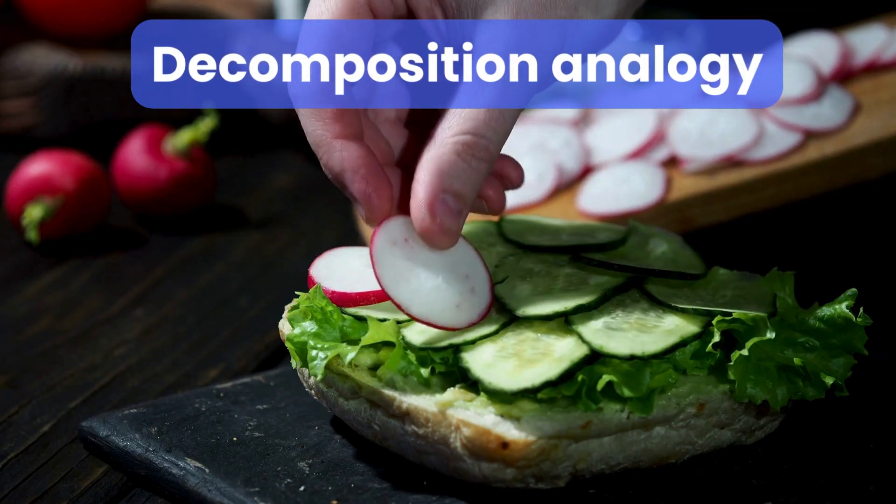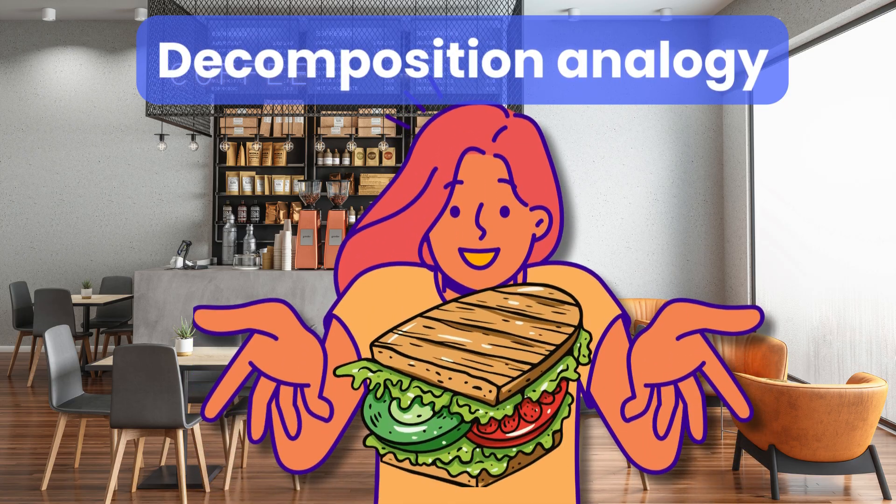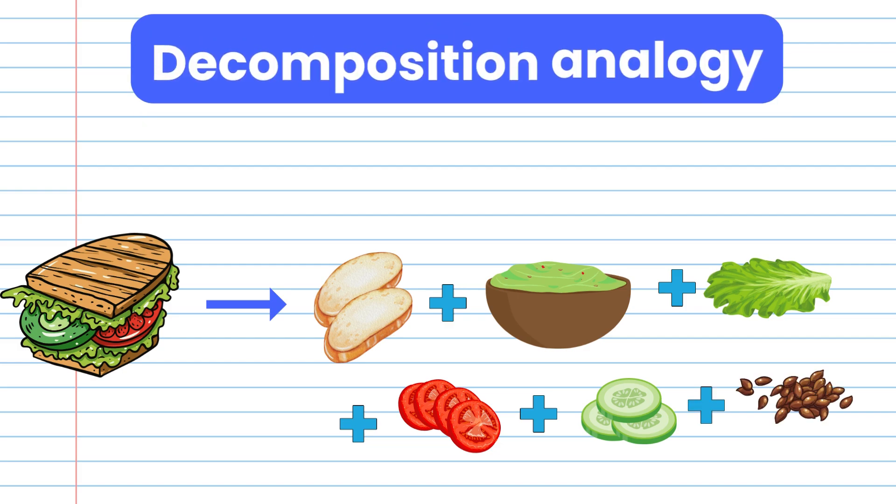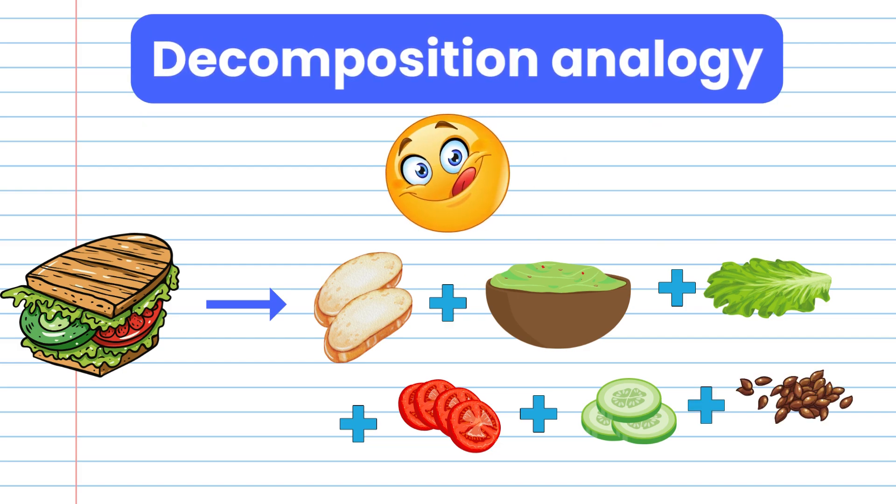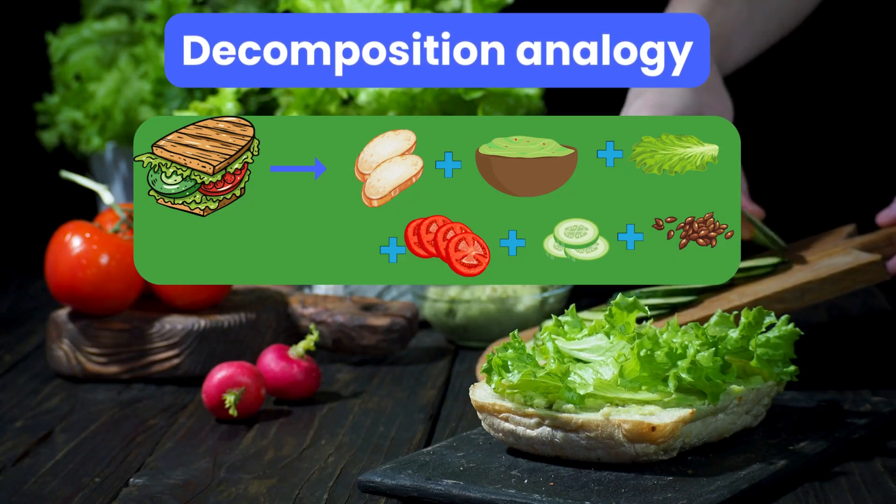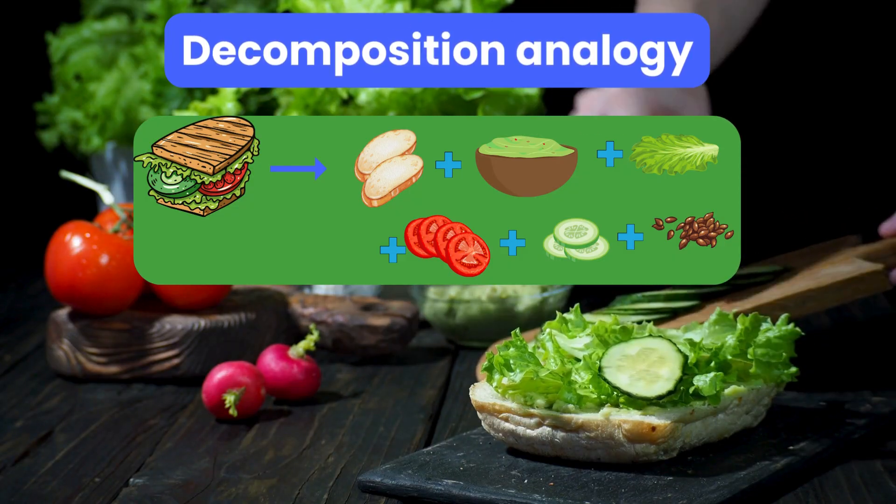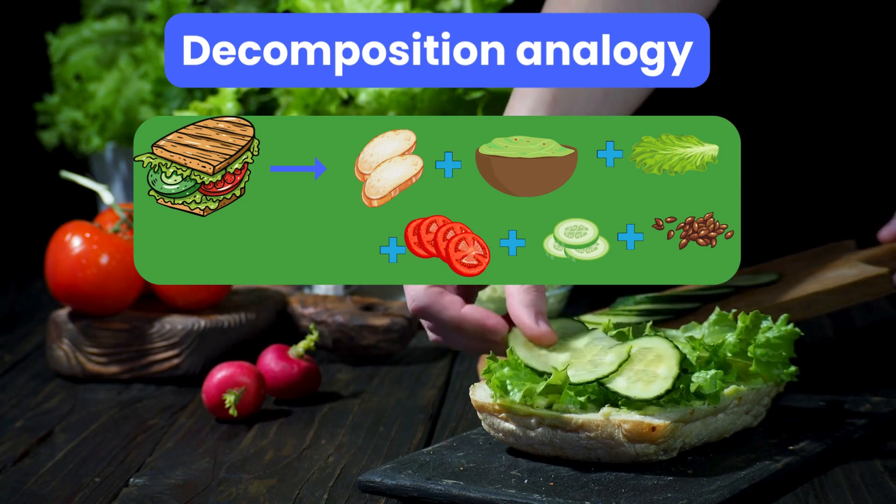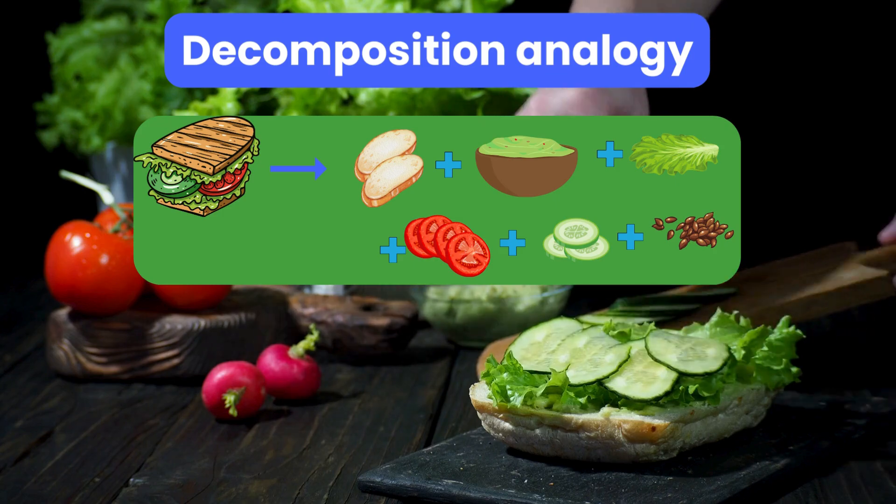Decomposition analogy. Here is a sandwich with avocado spread, lettuce, tomato, cucumber slices, and sprinkled flax seeds. Deconstructing the sandwich into its individual components mirrors the process of decomposition, where a compound breaks down into simpler substances.